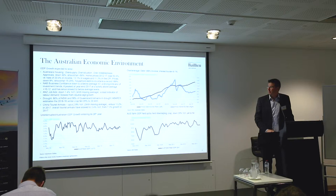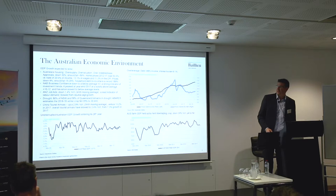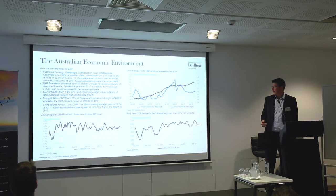Moving to the Australian economic environment — GDP growth is expected to slow down. Housing supply, business confidence, job ads, and drought are all starting to cause issues. Australian GDP is beginning to align with China in slowing down, and farm GDP has had a 20-year year-on-year fall that hasn't fully hit the numbers yet, but is coming through with some of the recent disasters.